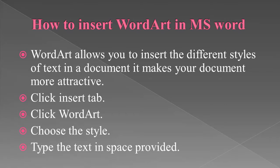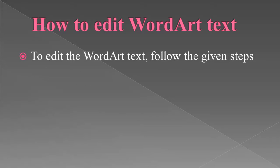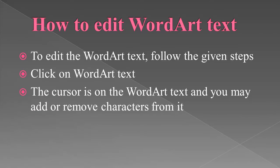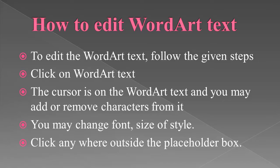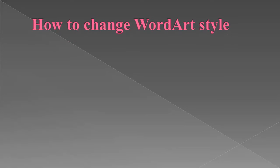Now let us study how to edit Word Art text. To edit Word Art text, follow the given steps. First, click on the Word Art text and select the text you want to convert. Then the cursor is on the Word Art text and you may add or remove characters from it. Next, you may change the font size or style. Then click anywhere outside the placeholder box.